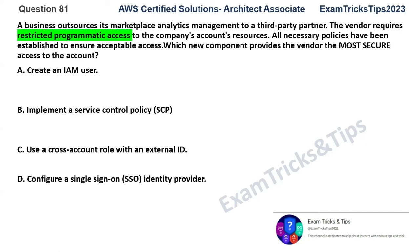Option A: create an IAM user. An IAM user with credentials poses a definite security risk if compromised. You should always go for a role rather than an IAM user. These user credentials can be accidentally leaked or misused. You are heavily relying on a particular user in the third-party partner's organization, and if something goes wrong by mistake or accident, it's not secure. So option A is incorrect.